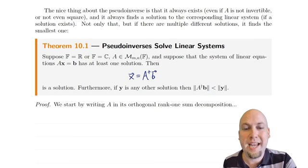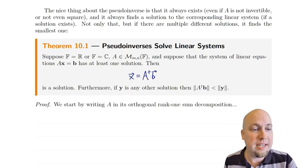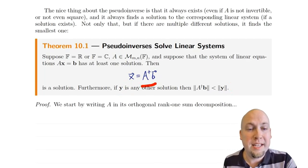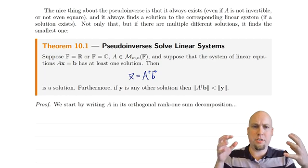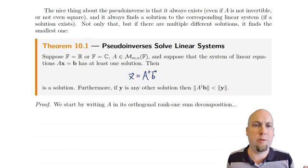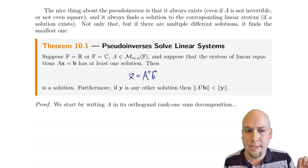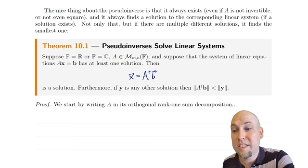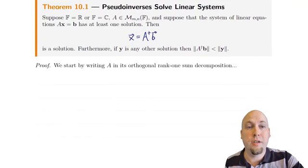Furthermore, something really nice happens: it's not only a solution, but it's the smallest solution. If you pick any other solution y, that vector is going to have strictly bigger norm than this solution. We'll talk about geometrically why that's a desirable property in a minute. So first, let's prove this theorem and see where it comes from.